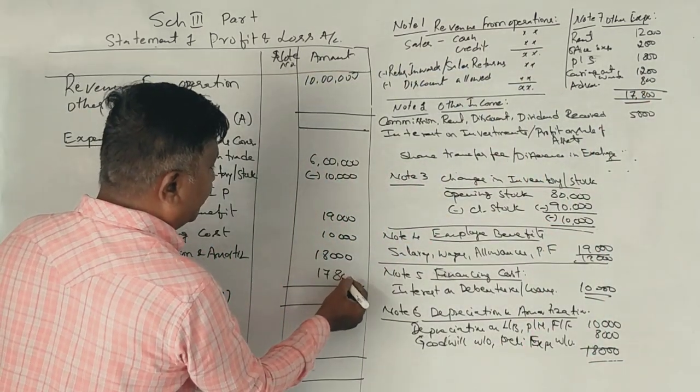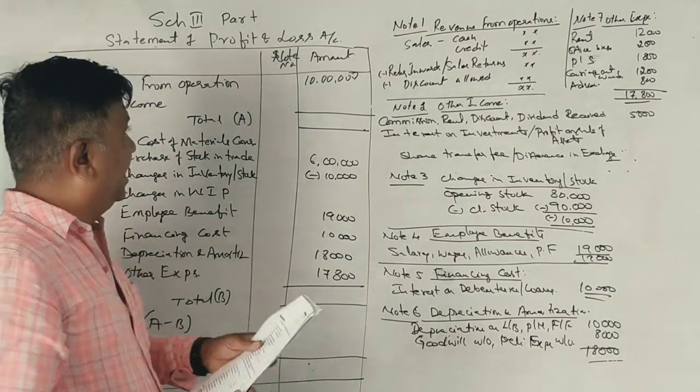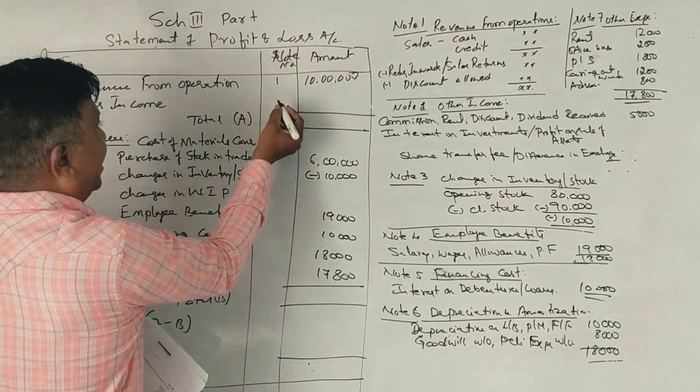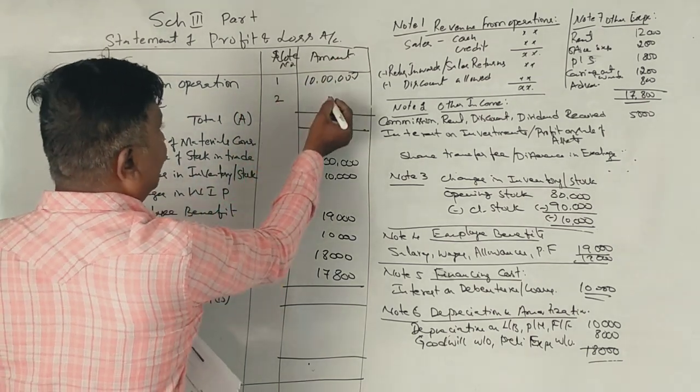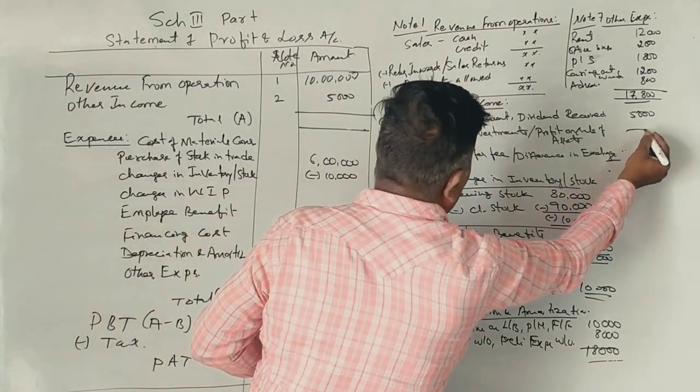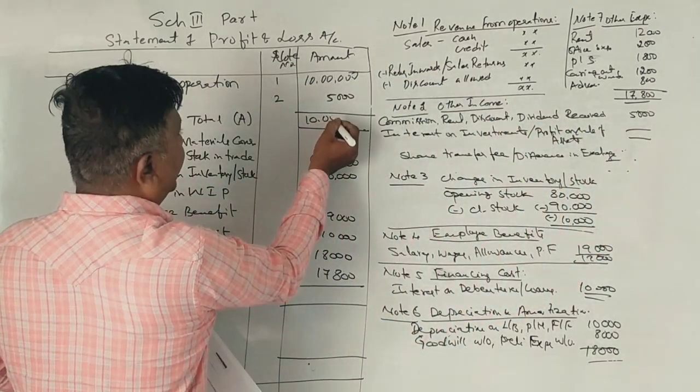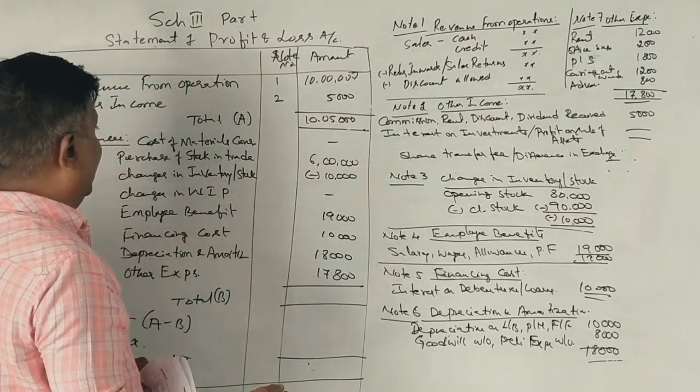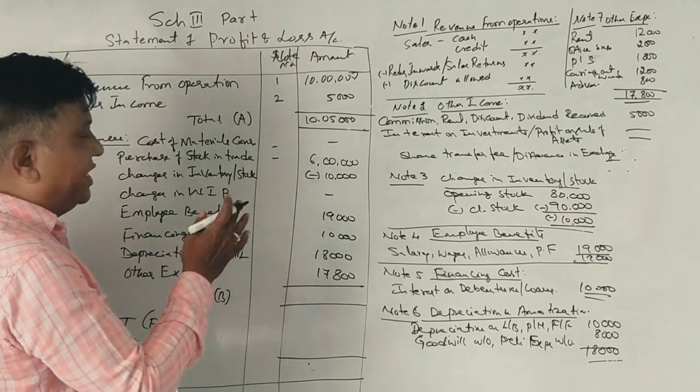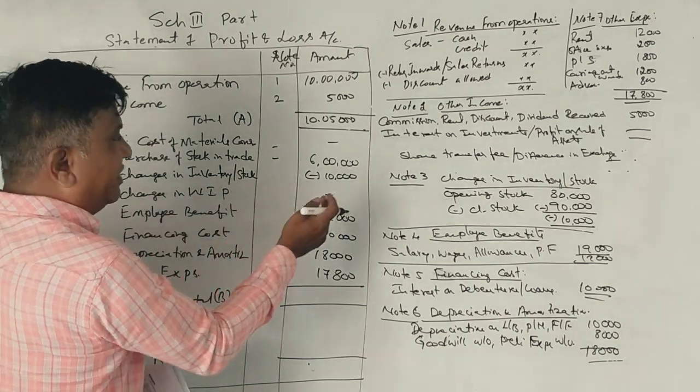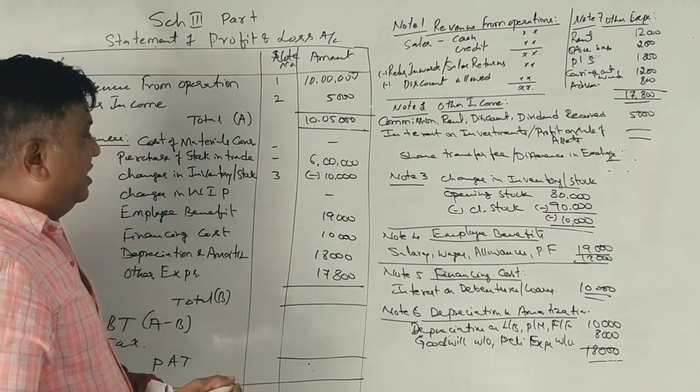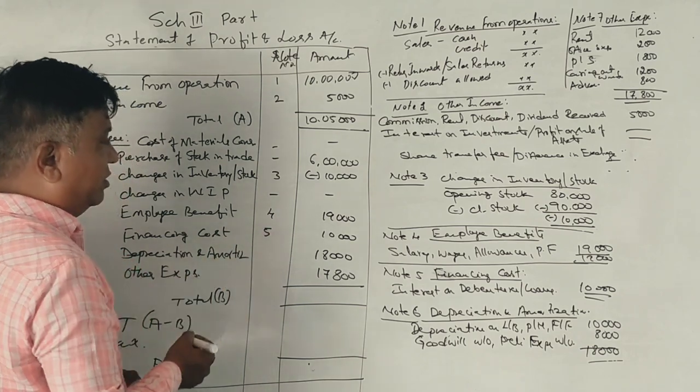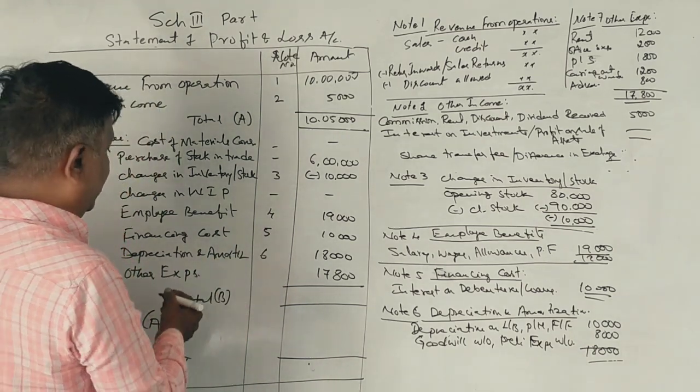Cost of material consumed, changes in work in progress, stock of purchase of stock in trade, changes in inventory, employee benefit, financing cost, depreciation, amortization and other expenses.